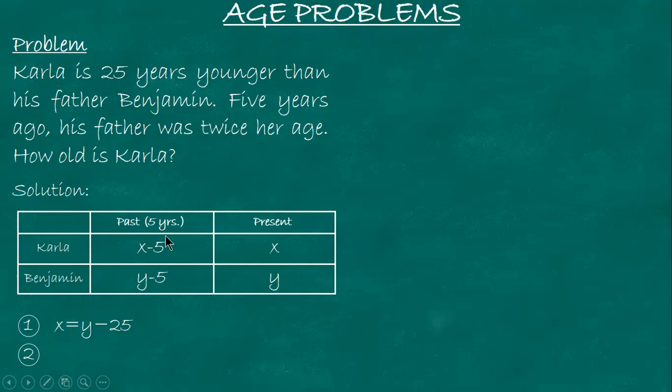For the second sentence, it's easy now. Five years ago, focus on their ages five years ago - that's x minus 5 and y minus 5. Five years ago, his father was twice her age. So if his father was 60, Carla was 30. Twice means multiplication, times 2. So you multiply 2 to Carla's age to equal Benjamin's age. The equation is: Benjamin equals 2 times Carla.